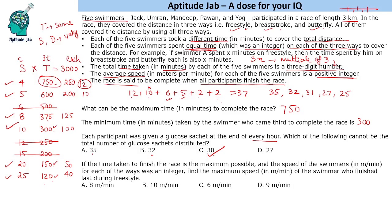The next question: if the maximum possible time is taken, that means 750 minutes, and the speed of the swimmers in meters per minute for each of the three ways was an integer. The overall average speed is also an integer. We need to find the maximum speed of the swimmer who finished last, during the freestyle phase.